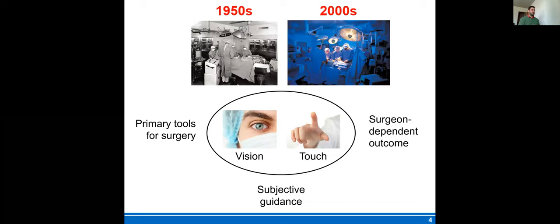So first on basics. If you look at the evolution of technologies helping surgeons to perform their duties, here's a picture of 1950s and 2000 operating rooms. You can see there's been not much change in terms of helping the surgeon perform surgery. Their primary tools are vision and touch, which in turn leads to subjective guidance and surgeon-dependent outcomes. We think there is room for improvement to enhance vision and turn subjective guidance into objective guidance for better healthcare outcomes.